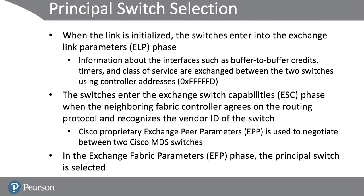During the principle switch selection there are certain phases that devices go through. First is the ELP phase — when the link is initialized, the switches enter the Exchange Link Parameters phase. During this phase, information about the interfaces such as buffer-to-buffer credits, timers, and cost values are exchanged between the two switches using the controller address, which is fixed to 0xFFFFFD. Then we have the Exchange Switch Capabilities phase, entered when the neighboring fabric controller agrees on the routing protocol and recognizes the vendor ID. The Cisco proprietary Exchange Peer Parameters protocol, or EPP, is used to negotiate between two Cisco MDS switches. Then we have the EFP phase, or Exchange Fabric Parameters phase, where the principle switch is actually selected.